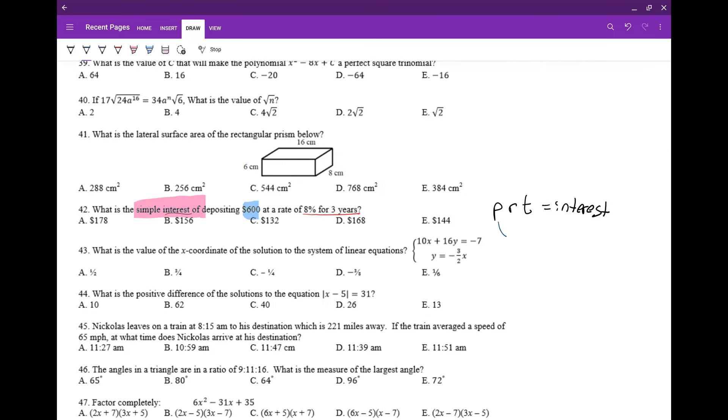Your deposit is 600, that's your principal. You multiply that by your rate which is 8%. So 8% is equal to 8 per 100, which is equal to 0.08. You write your rate in decimal form: 0.08 times time, which is three years.